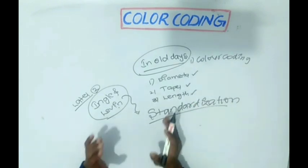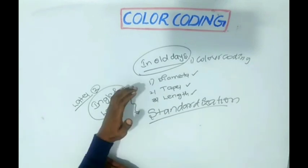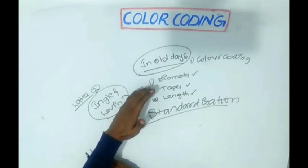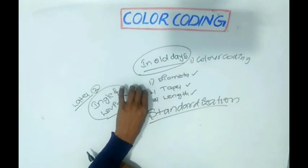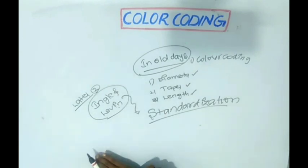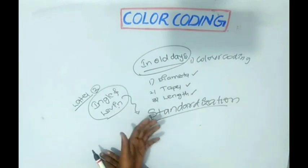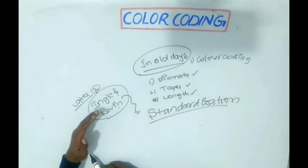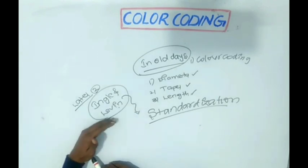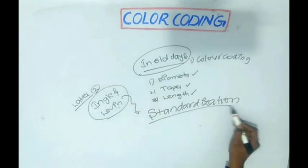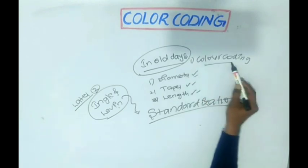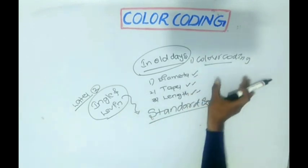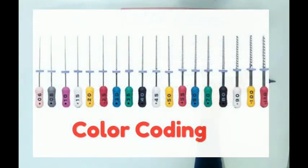So, in olden days, manufacturers had manufactured the endodontic instrument without keeping the diameter, taper, and length in mind — they manufactured according to their own methods. Later, Ingell and Levin gave a standardization for the endodontic instrument based on taper, diameter, length, and color coding. So today, we are going to discuss about color coding.